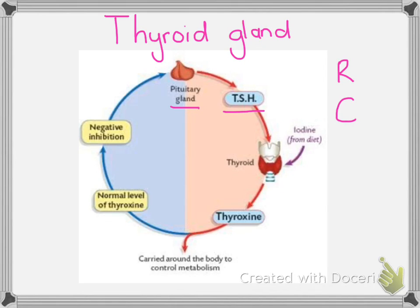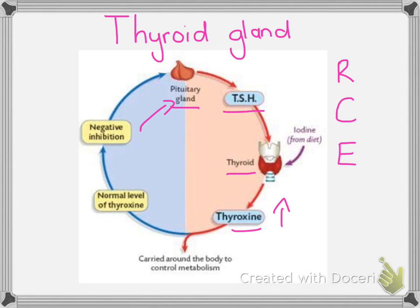Once we've gone from our corrective measure, we now need to go to the effector, which in this case is the thyroid gland. The thyroid gland is going to use iodine from your diet to produce thyroxine. That thyroxine then goes off to the body and is used to maintain your basal metabolic rate. As the level of thyroxine increases, this is going to have a negative feedback effect on the pituitary gland, because the rising thyroxine levels are going to tell the pituitary gland that there is enough thyroxine, so we don't want to keep making more. The pituitary gland senses the higher levels of thyroxine and thyroid stimulating hormone starts to decrease.